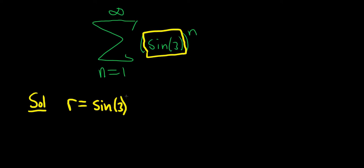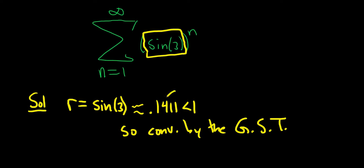All right, I got 0.1411. So this is approximately 0.1411, which in absolute value is certainly less than 1. So the series will converge by the geometric series test. So it converges by the GST, geometric series test. So if the absolute value of r is less than 1, it converges. In this case, the absolute value of this is positive, so there's no need to take the absolute value because it's already positive.